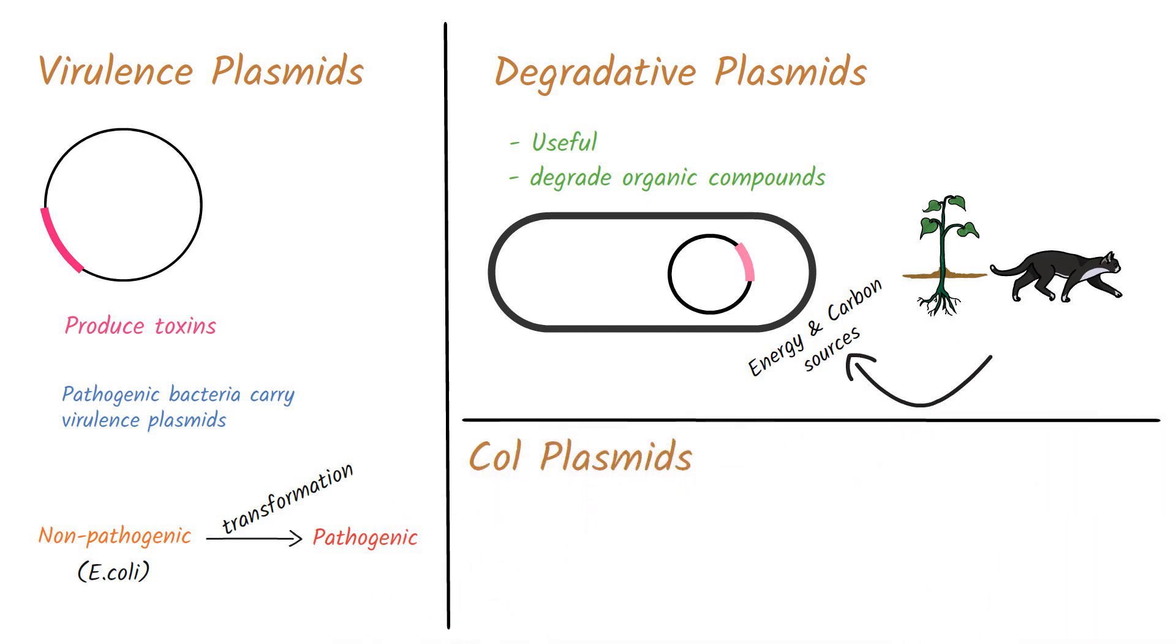Col plasmids carry genes that code for bacteriocins. Bacteriocins are proteins that kill other bacteria.